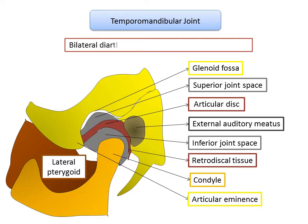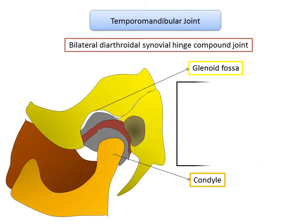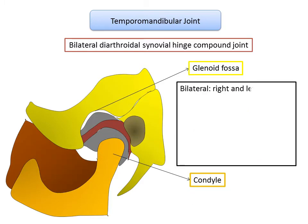The temporomandibular joint is a bilateral, diarthroidal, synovial, hinge, and compound joint. Bilateral, as the name indicates, means there are two joints — one on the right side and one on the left side, so the TMJ is present in pairs. Diarthroidal means the joint can make free movements in various planes.